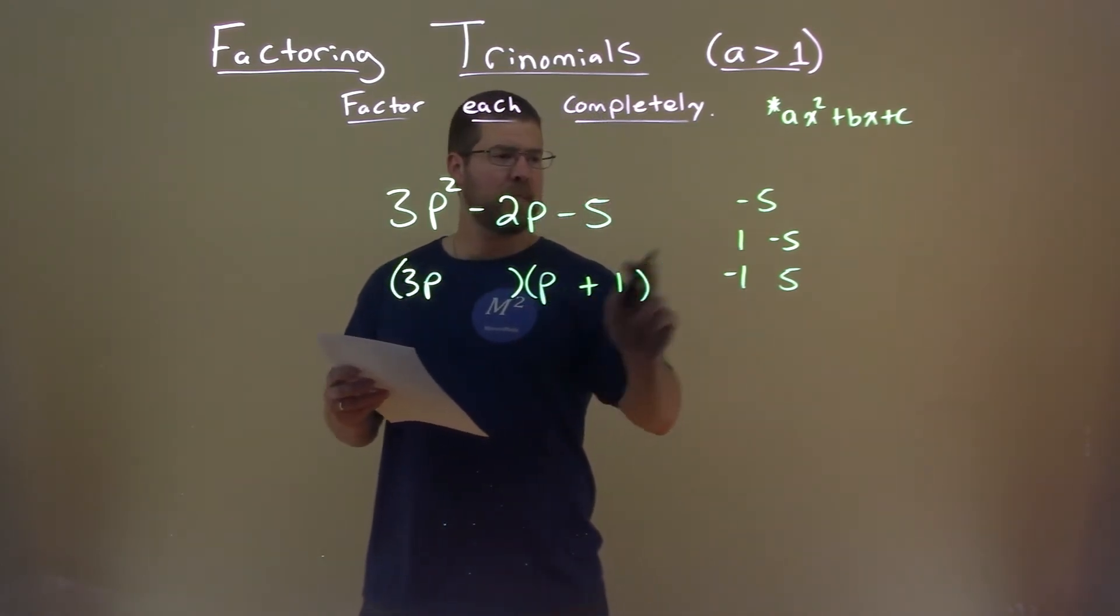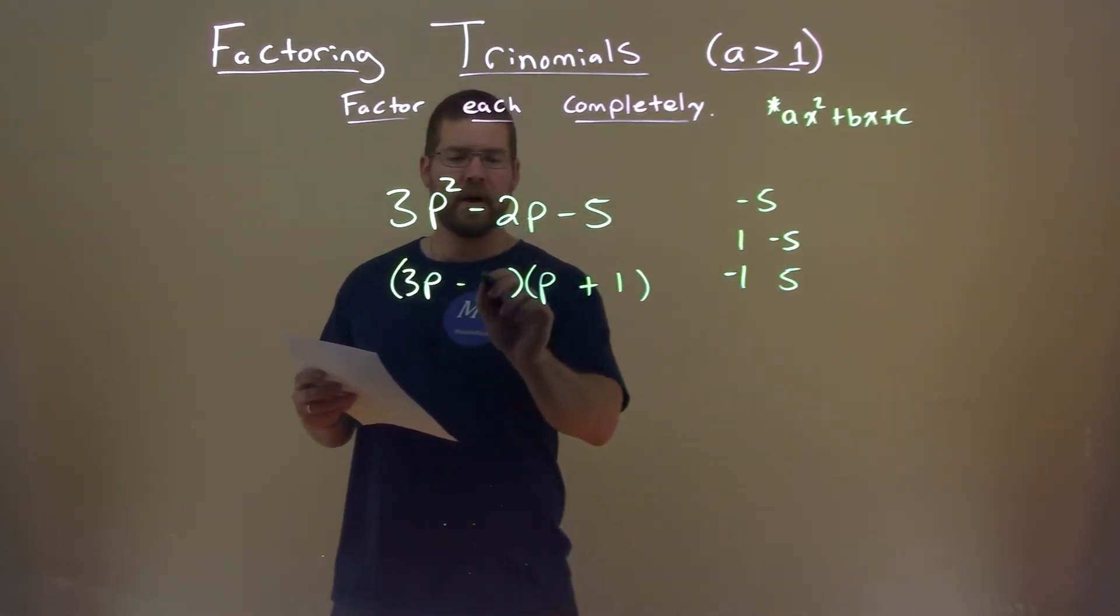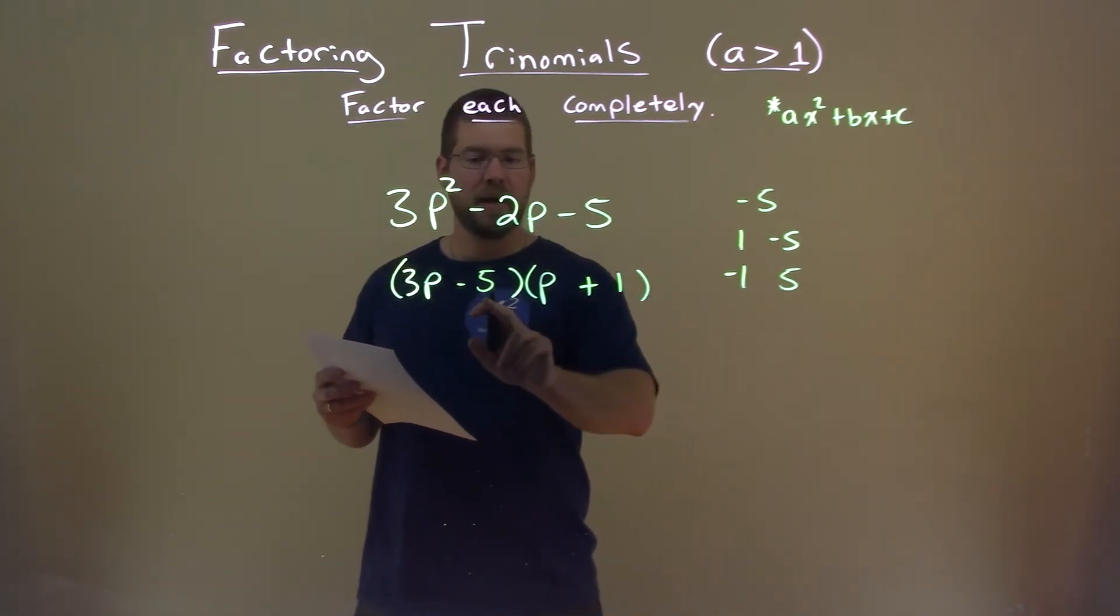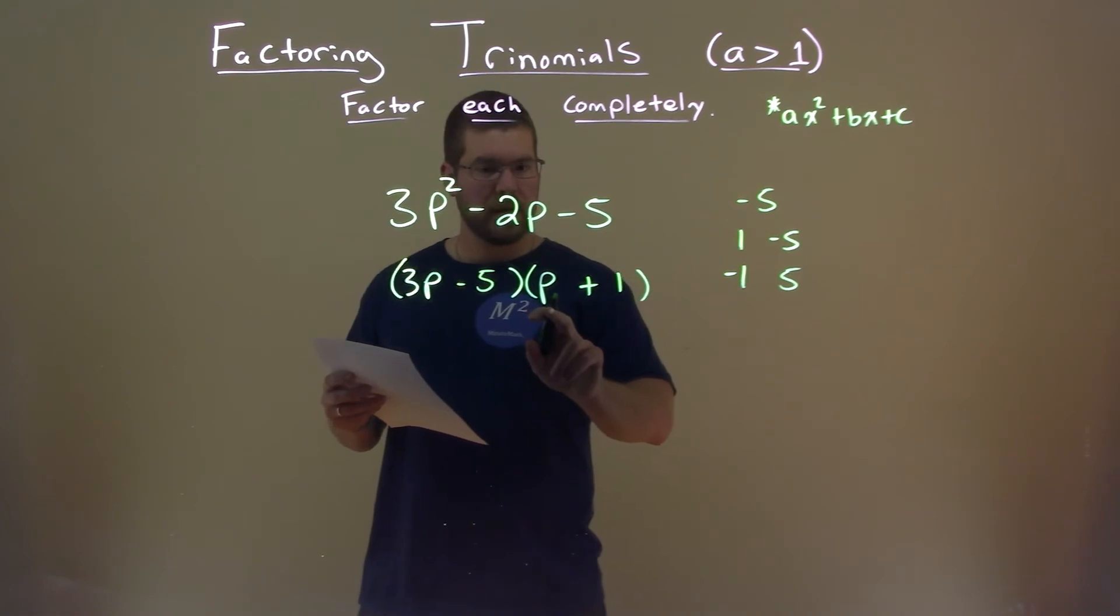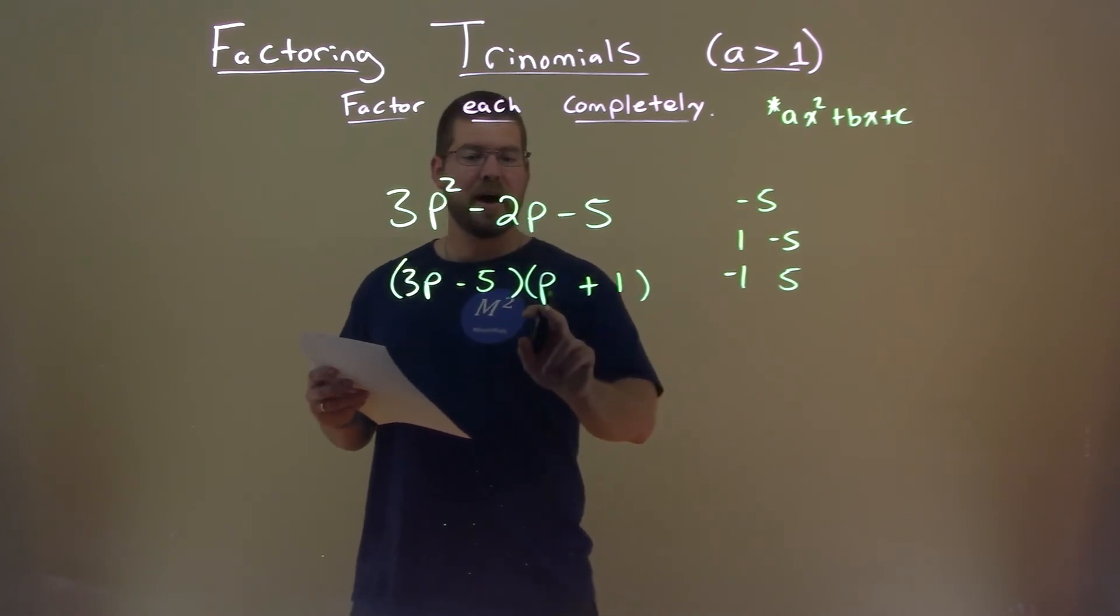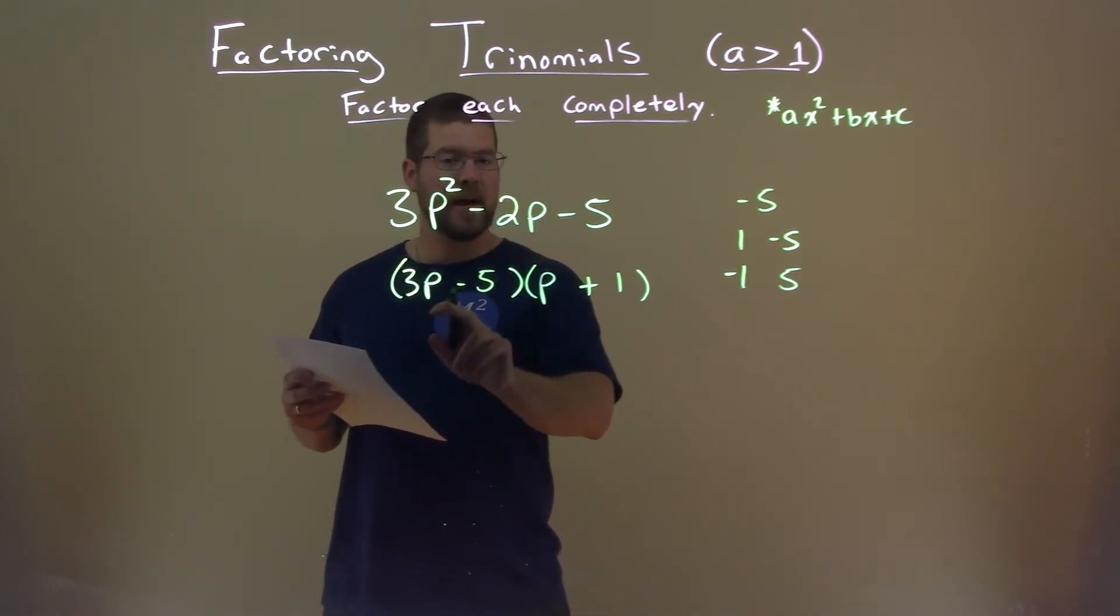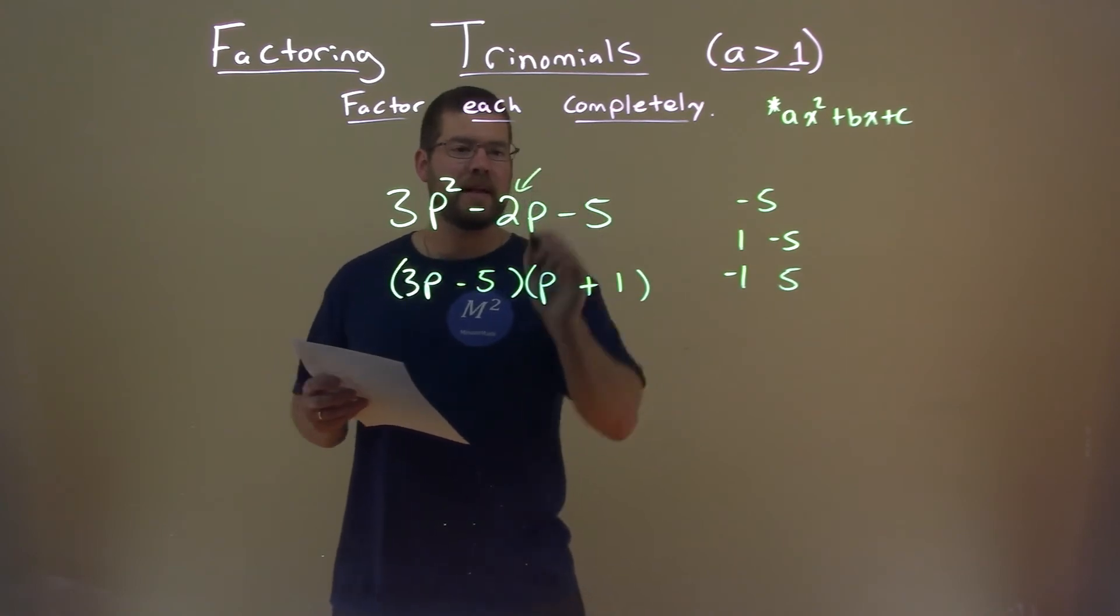Then, if we take p times its pair, so negative 5 and minus 5 here, 3p times 1 is 3p. Negative 5 times p gives you negative 5p. We add that together, gives us the negative 2, and that's the goal there.